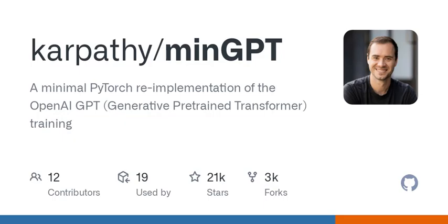Think of MinGPT as a smaller, more educational version of GPT models. It's designed to be clean, interpretable, and most importantly, accessible for those who want to understand how these models work without getting bogged down in a complex code base. Unlike many implementations out there, MinGPT aims to distill the essence of the GPT architecture into about 300 lines of code. It focuses on core concepts like sequence feeding into a transformer and deriving a probability distribution for the next index in a sequence.